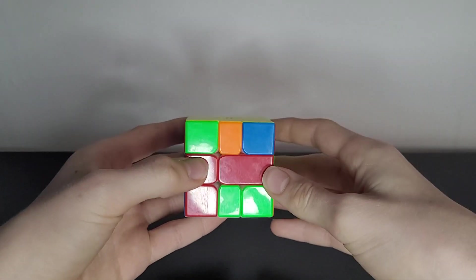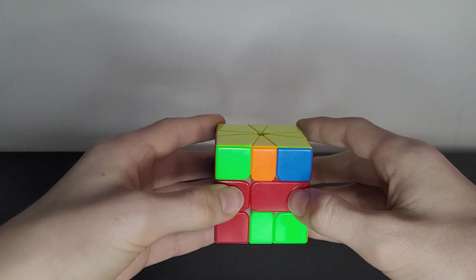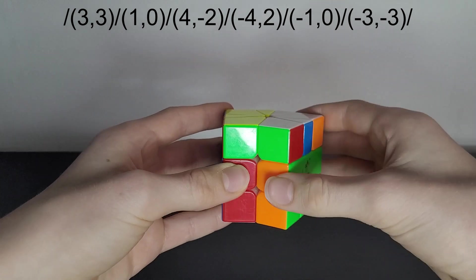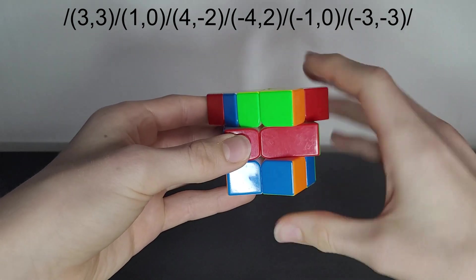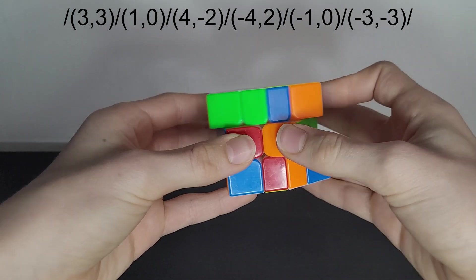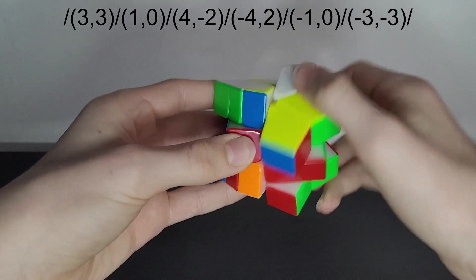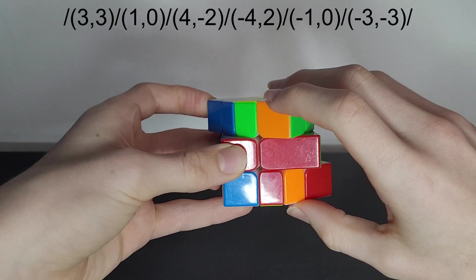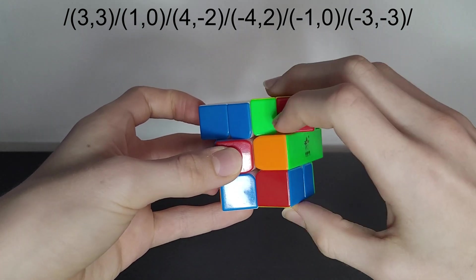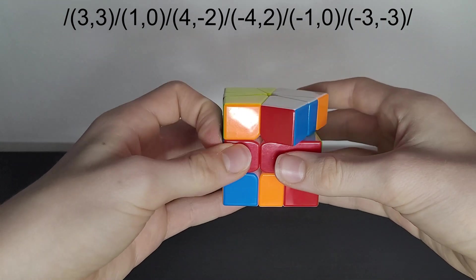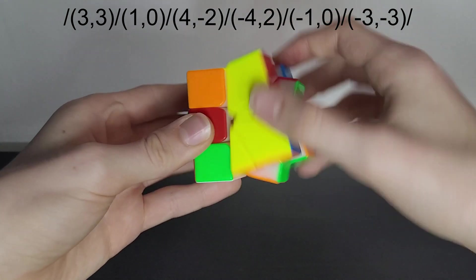The algorithm that you should do here is slash 3,3 slash 1,0 slash 4,-2 slash -4,2 slash -1,0 slash -3,-3.